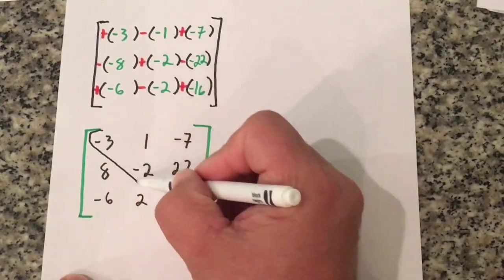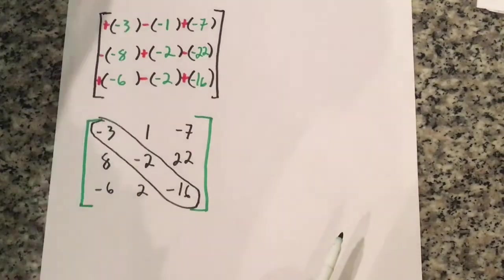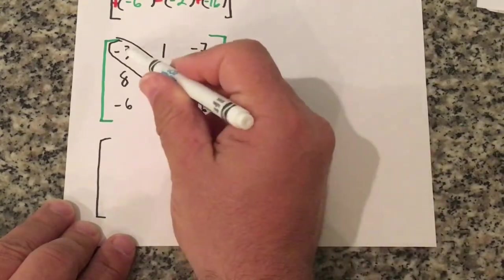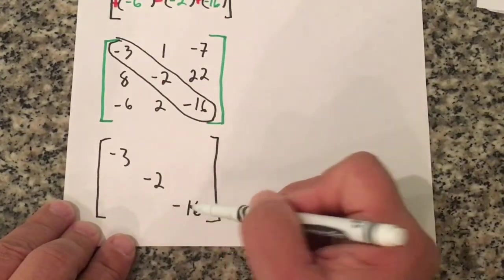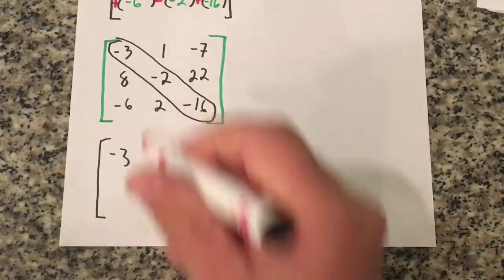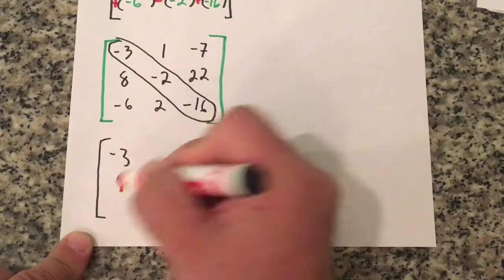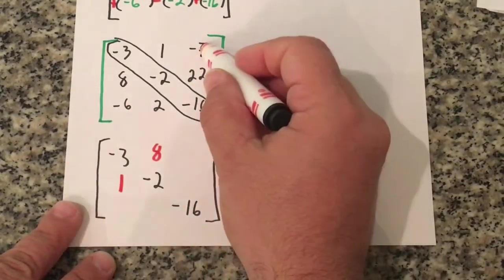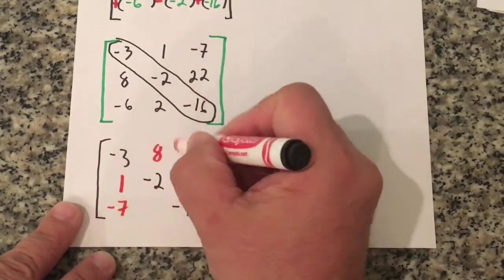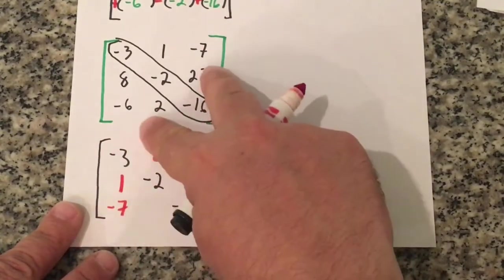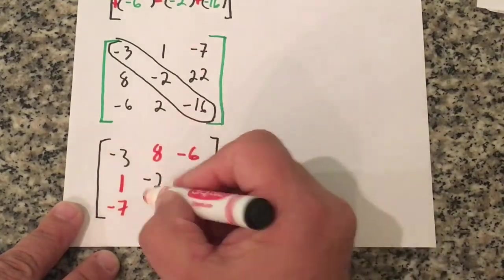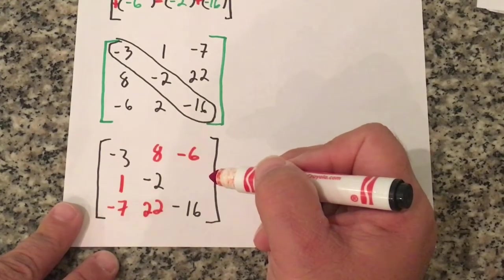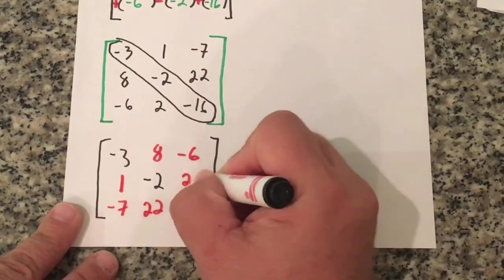Now I have to do a reflection across the diagonal. I'm going to copy that diagonal down into a new matrix: negative 3, negative 2, negative 16. Then I reflect 8 and 1 — the 1 goes here and the 8 goes there. Then I reflect negative 6 and negative 7 — negative 7 goes over here and negative 6 goes up there. One more reflection of 2 and 22 — 22 slides down and the 2 slides up. Almost done.